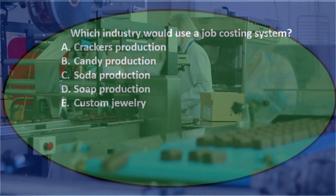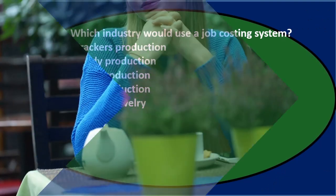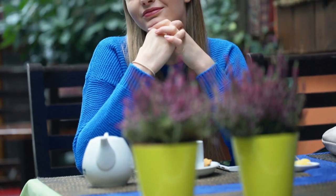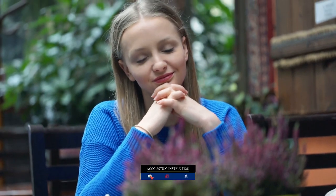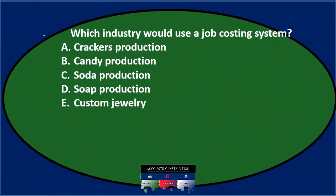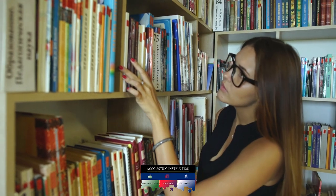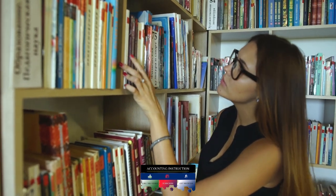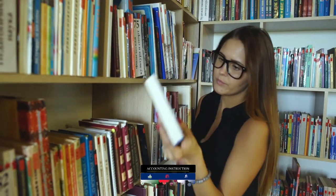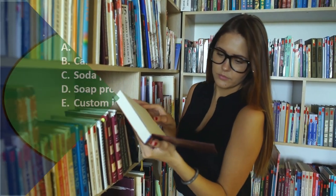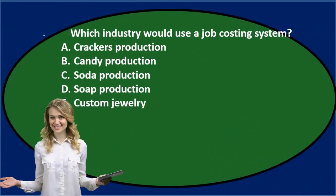When you think about a job cost system, we're really comparing and contrasting between a job cost and a process cost system. The main distinction between those two systems is whether there's diversification in the types of things we're making. If there is diversification, we're probably going to use a job cost system. If everything is totally the same, we're probably going to use a process cost system.